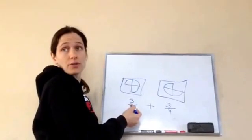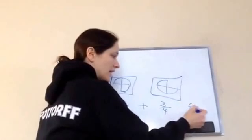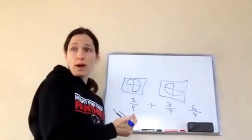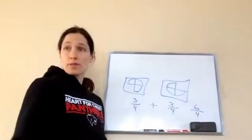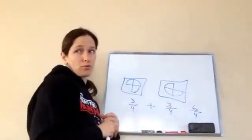6 fourths. Very good. So what did I do? You added your numerator. Yes, I added my numerator. 3 plus 3 is 6, which were broken into 4s, right? So we have 6 fourths, which again, this is an improper fraction.